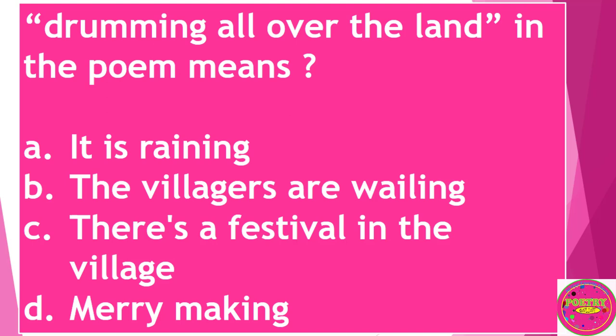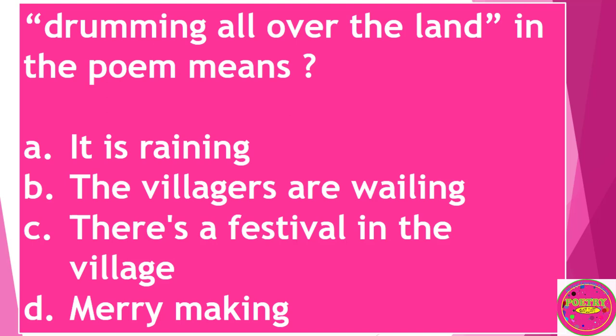"Drumming all over the land" in the poem means: A. It is raining. B. The villagers are wailing. C. There is a festival in the village. D. Merrymaking. The correct answer to this question is A — It is raining.